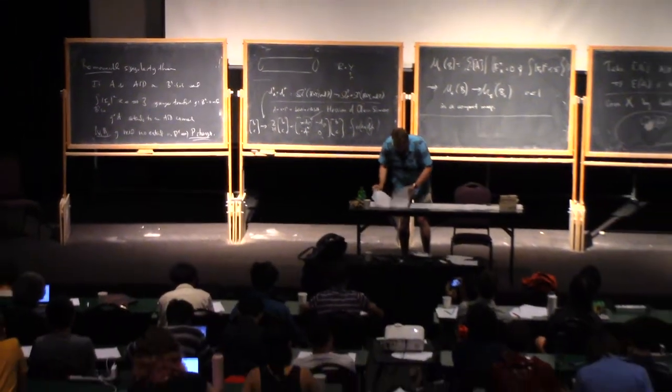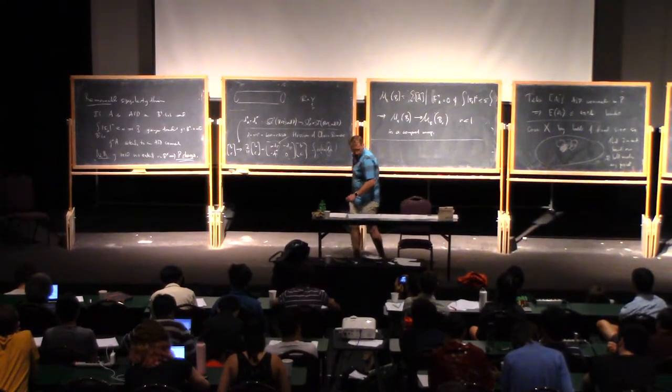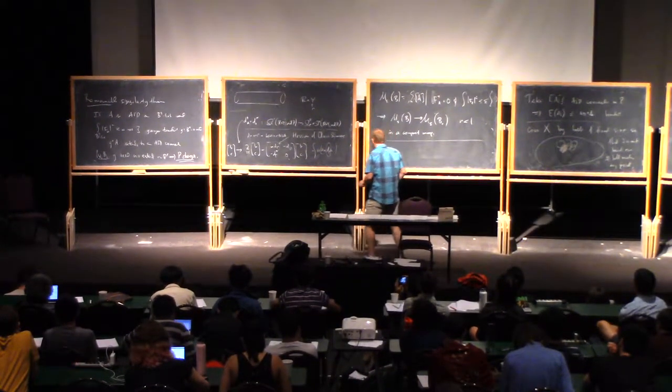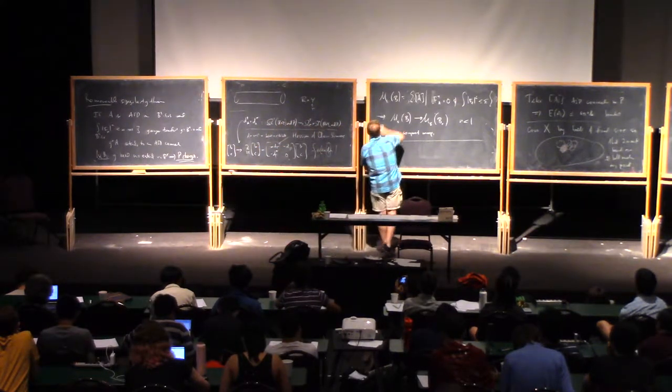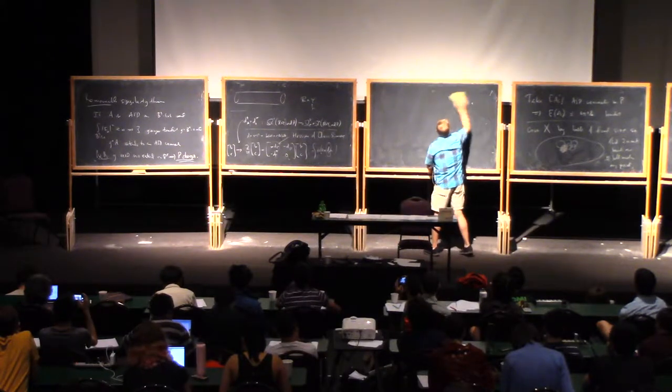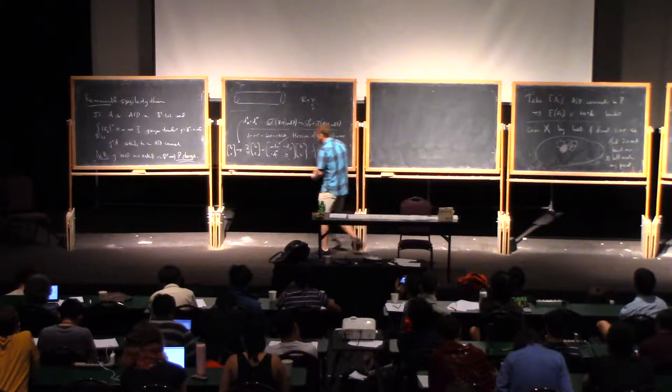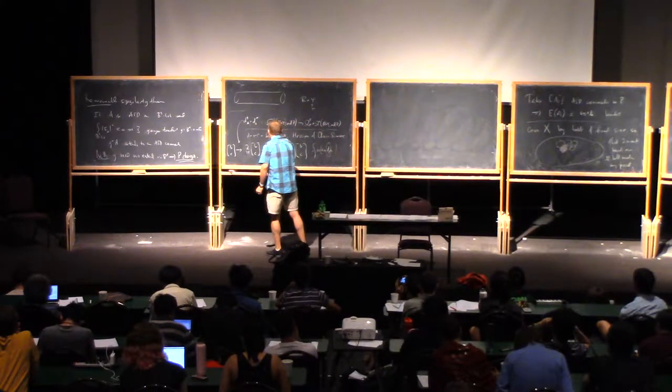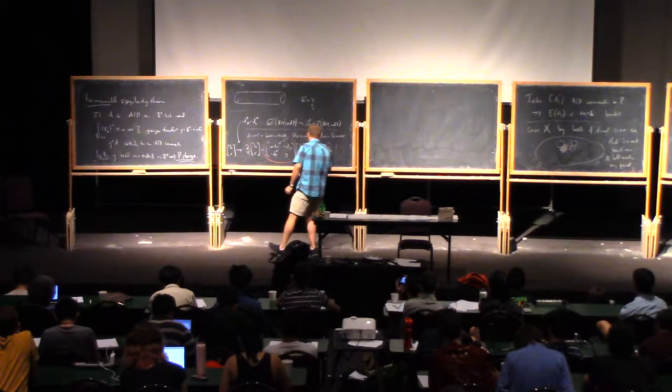And what I want to explain is an important point here. So this thing, this bit is, well, we'll call the extended Hessian.